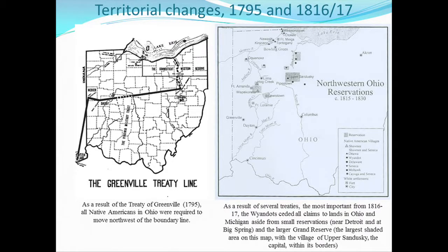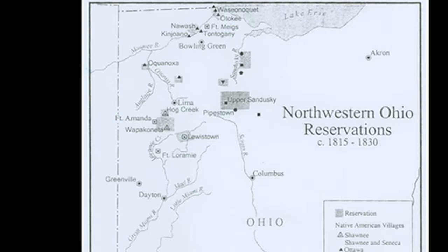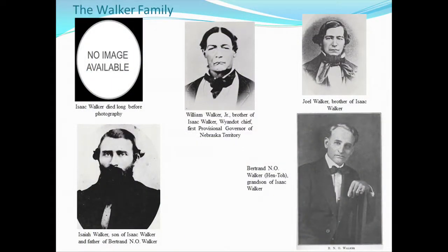Those territorial changes I was talking about: by 1817, what was once all Native territory is now a smattering of small reservations. The Wyandotte have two and part of another. The one I'm going to focus on — where my main character in my paper is living — is what's called the Grand Reserve, the largest of these, whose capital is called Upper Sandusky, sitting on the Sandusky River. Now I'm going to talk about my paper, and we have the advantage of having a lot of images by this point, though most of my work wasn't in the photography era. The main figure in my paper, Isaac Walker, has no existing images — no paintings, and he died before photography.